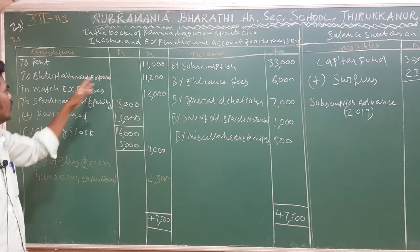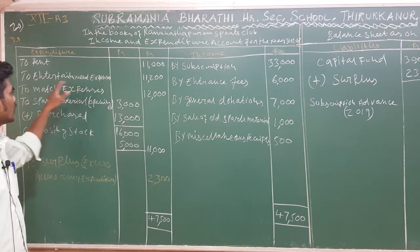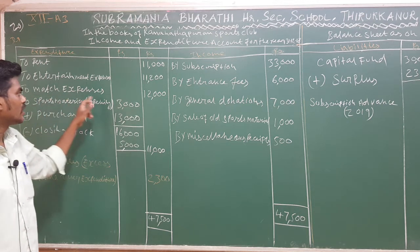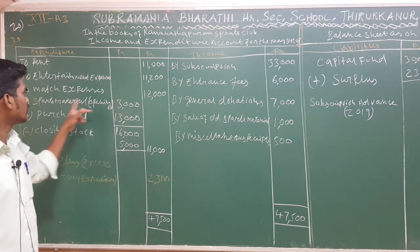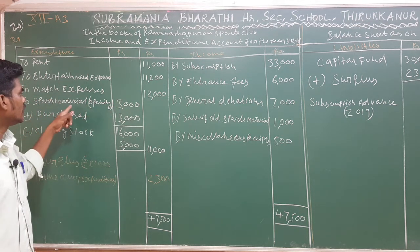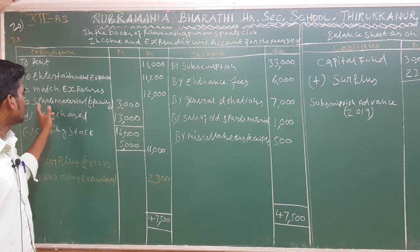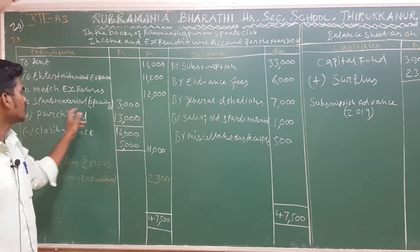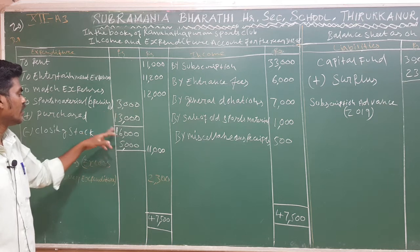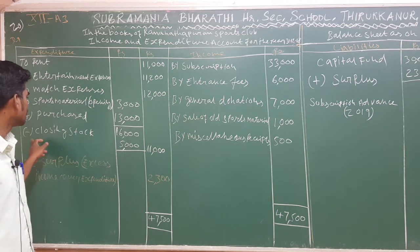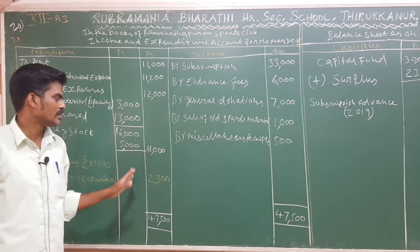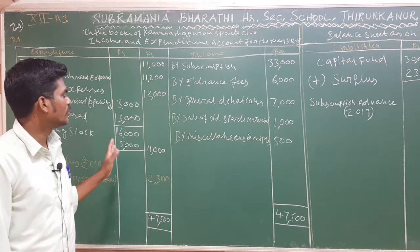On the expenditure side: rent 11,000; entertainment expense 11,200; match expense 12,000. For sports material consumed — opening stock 3,000 plus purchases 13,000 gives 16,000, less closing stock 5,000, leaving sports material consumed at 11,000. Wait — the remaining balance here is 15,000 as stated.